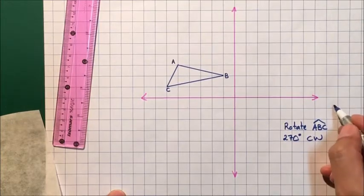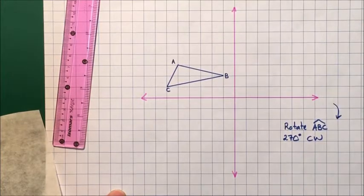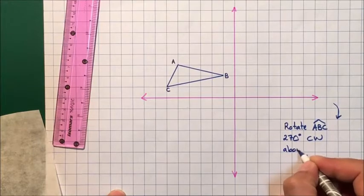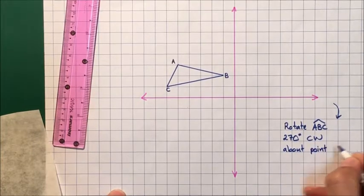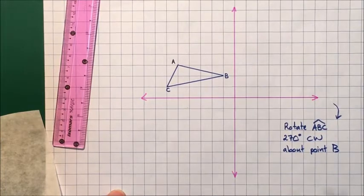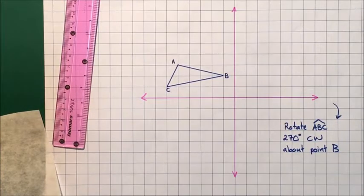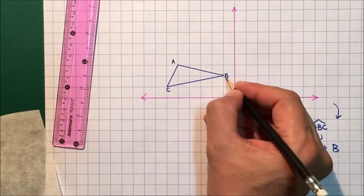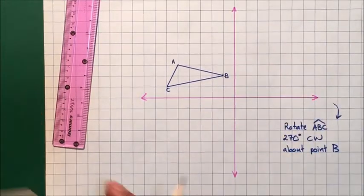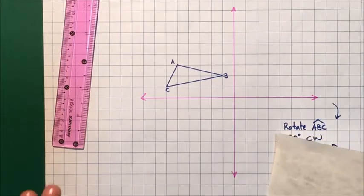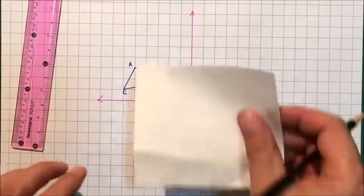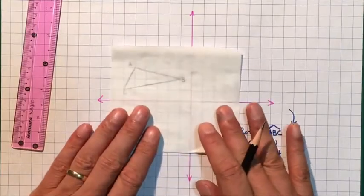Clockwise will be this way, about point B. Point B is here, so we're going to use point B as our center of rotation. Now that we know what we have to do, let's figure out how to set this up to get it done.